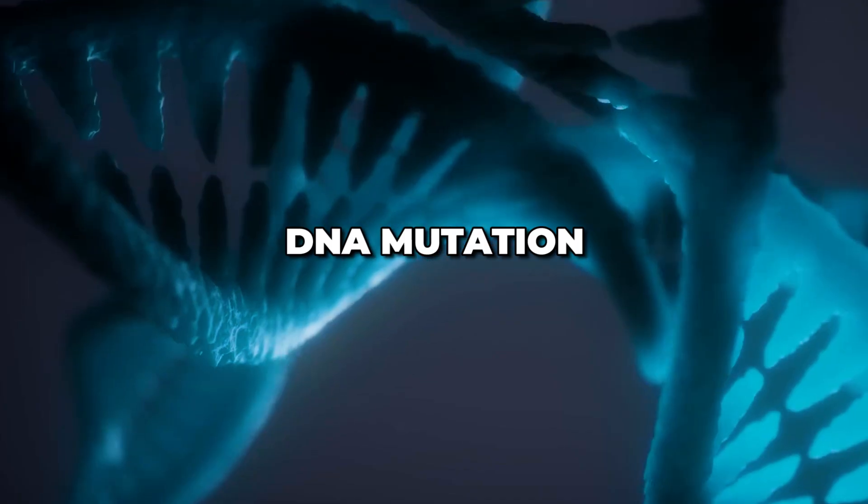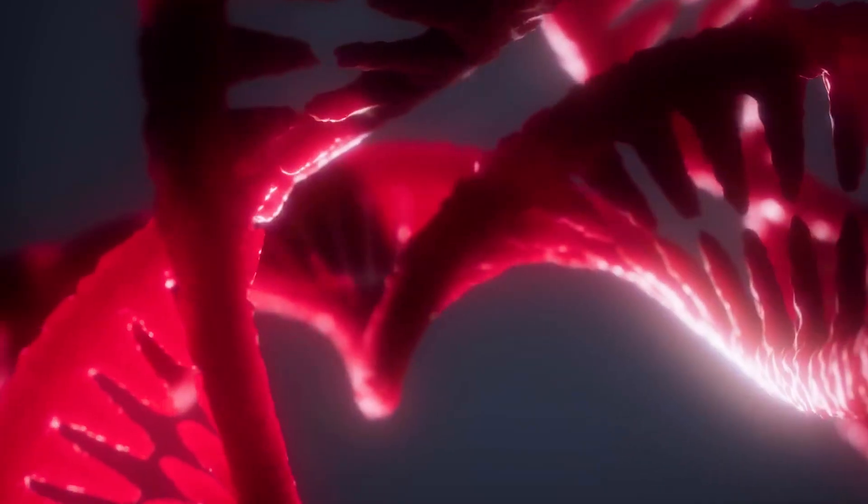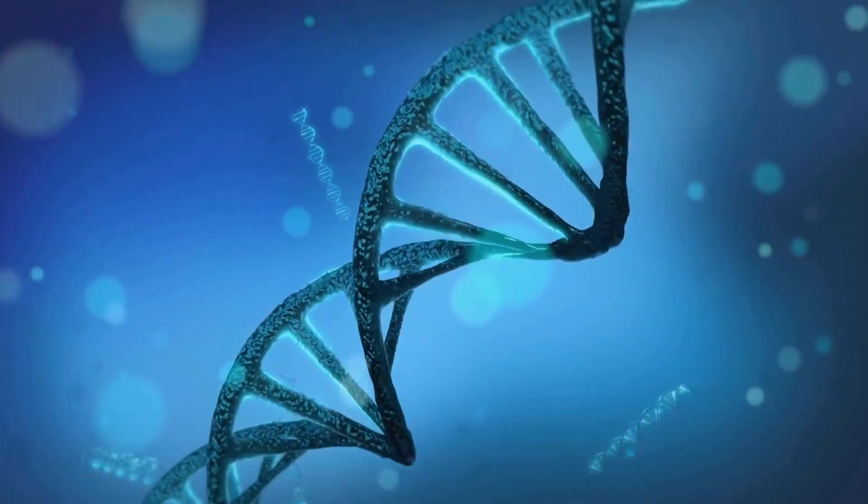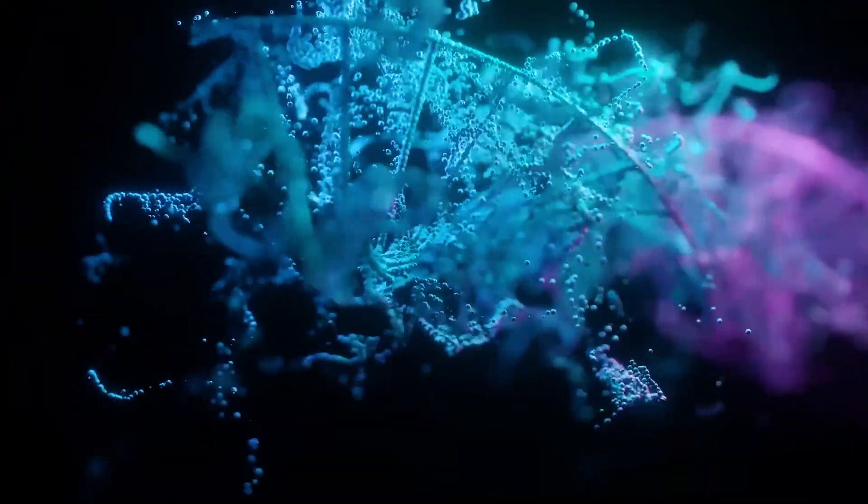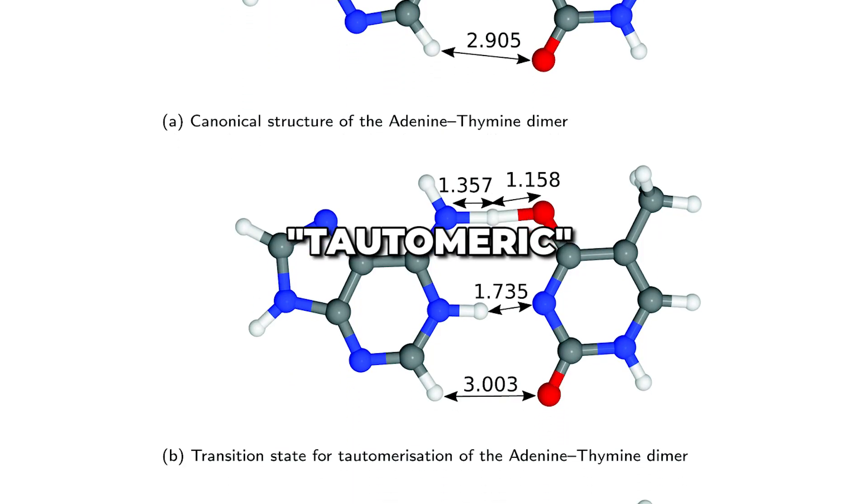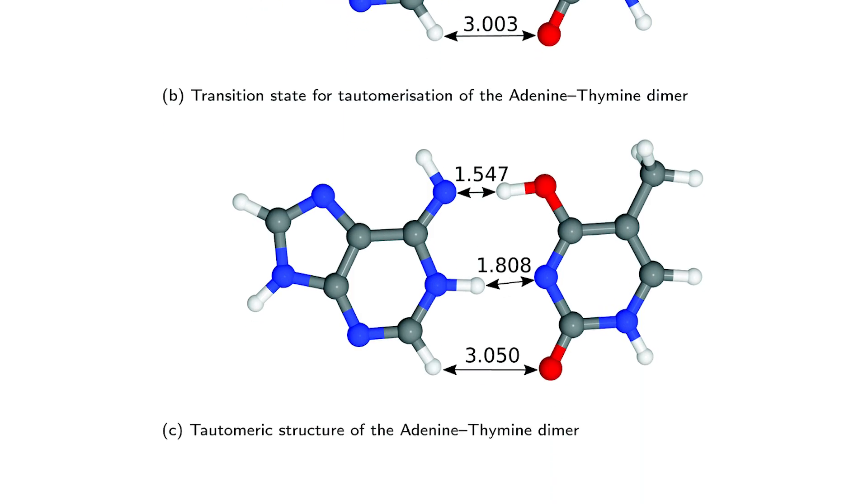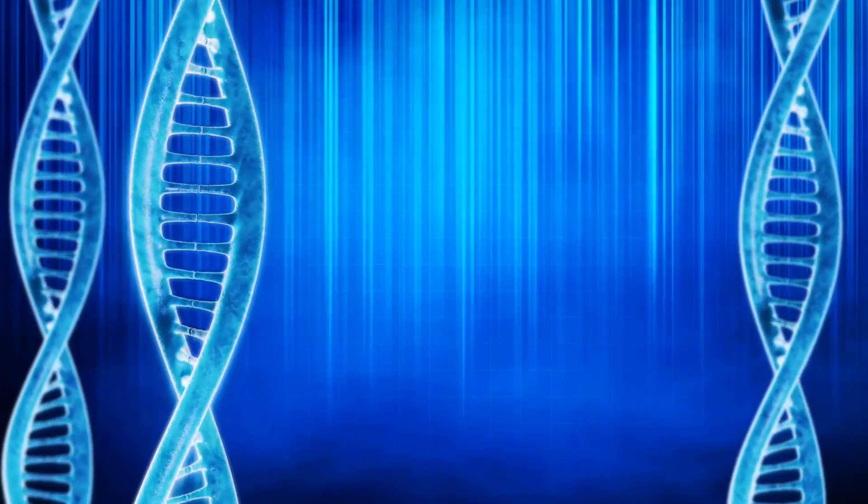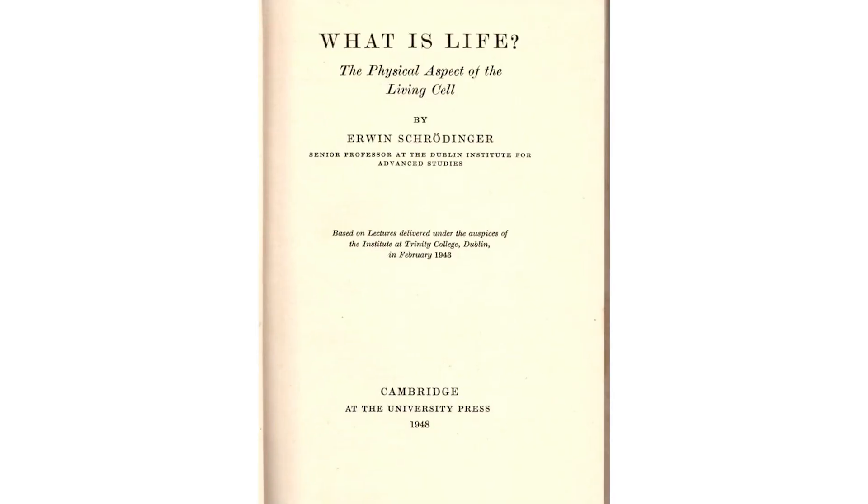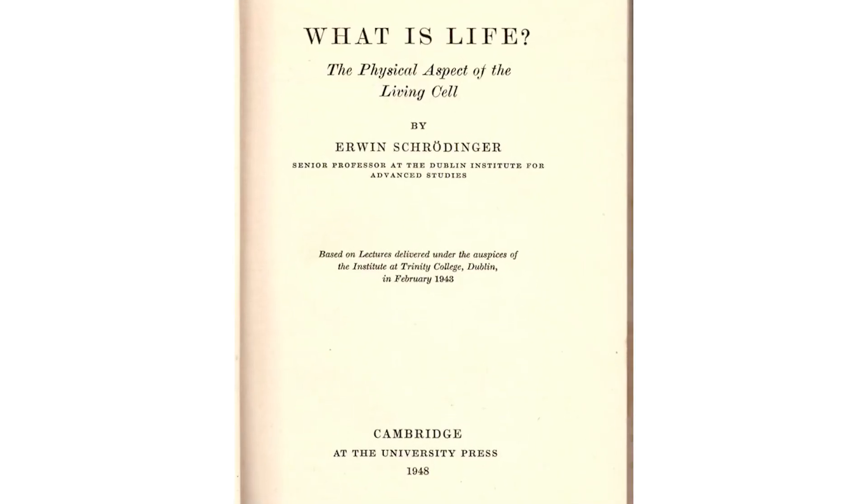Even DNA mutation, the driving force of evolution, may involve quantum processes. When DNA replicates, protons can create a certain quantum tunnel between paired bases, temporarily creating rare tautomeric forms that can lead to mismatches and mutations. This quantum mechanism was actually proposed by quantum physics pioneer Erwin Schrödinger in his influential 1944 book, What is Life?